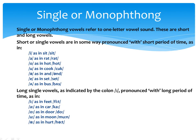Single vowels, or monophthongs, are vowels which refer to a one-target vowel sound. These can be short vowels and long vowels. In simple terms, short vowels are vowels pronounced with a short period of time. We say: I, ah, o, u, eh, and schwa. These are called short vowels because they require a short period of time in pronunciation — for example, 'sit'.